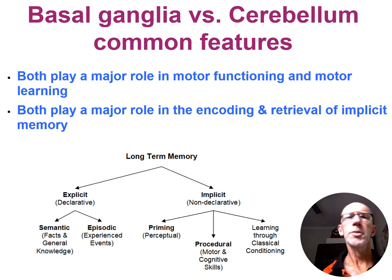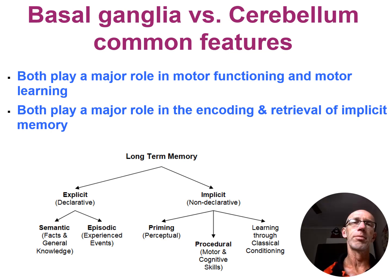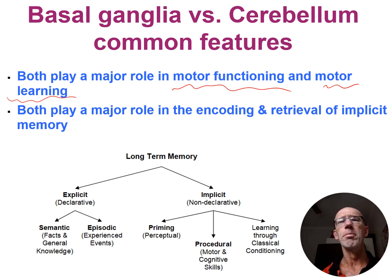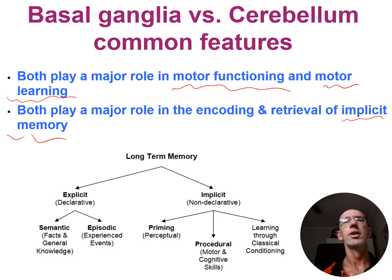That's because of the common ground that the basal ganglia and the cerebellum share in a broad sense, because both of them play a key role in the day-to-day mode of functioning and to a degree motor learning. They also play a major role in implicit memory — memories that are non-declarative, that we don't need to consciously recall.